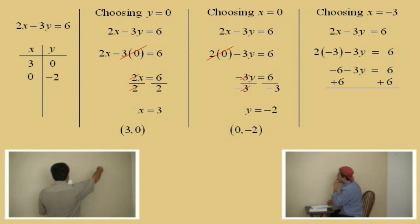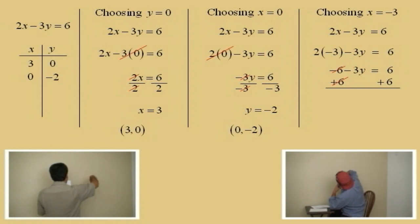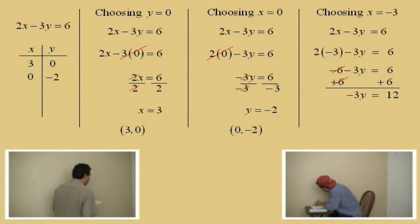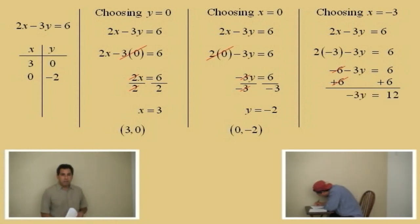Those cancel. And the left-hand side, we're left with negative 3y. And the right-hand side? 12. Very good. We have negative 3y equals 12.